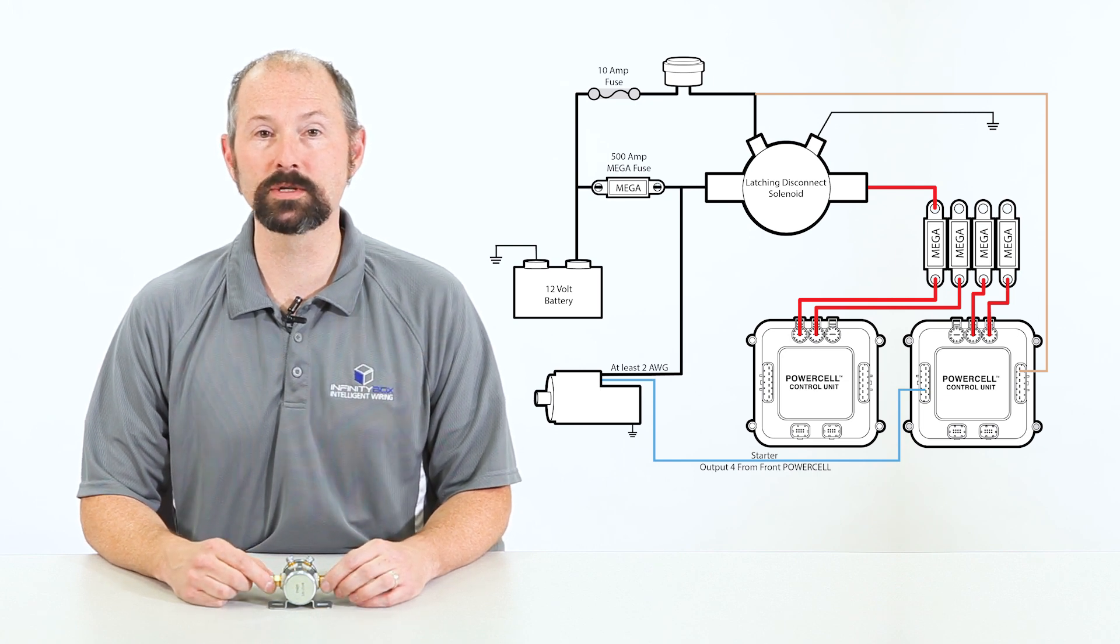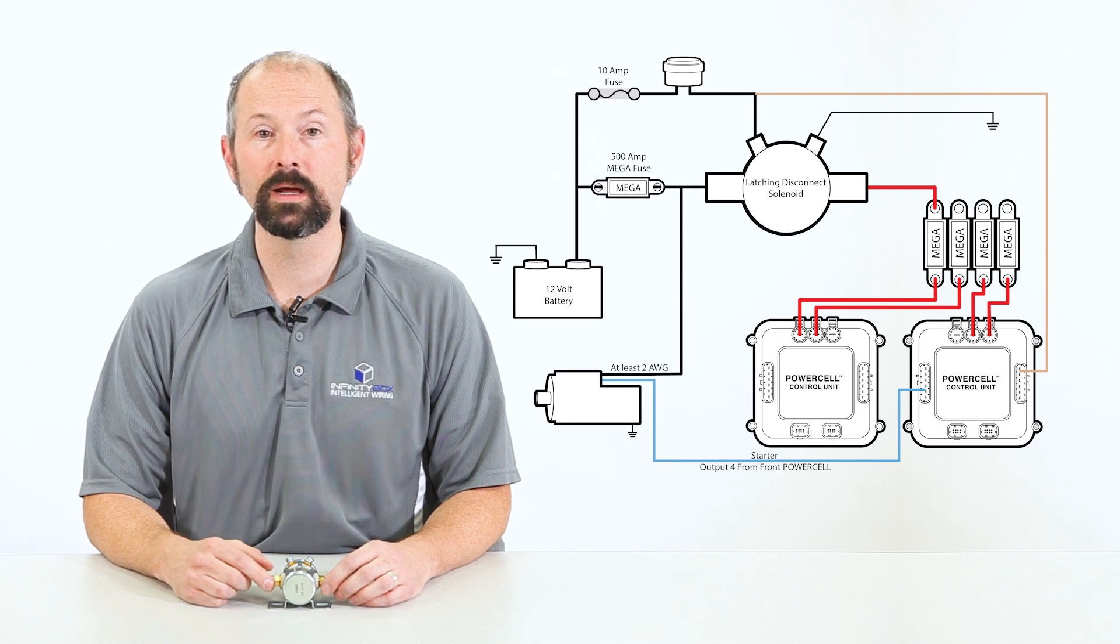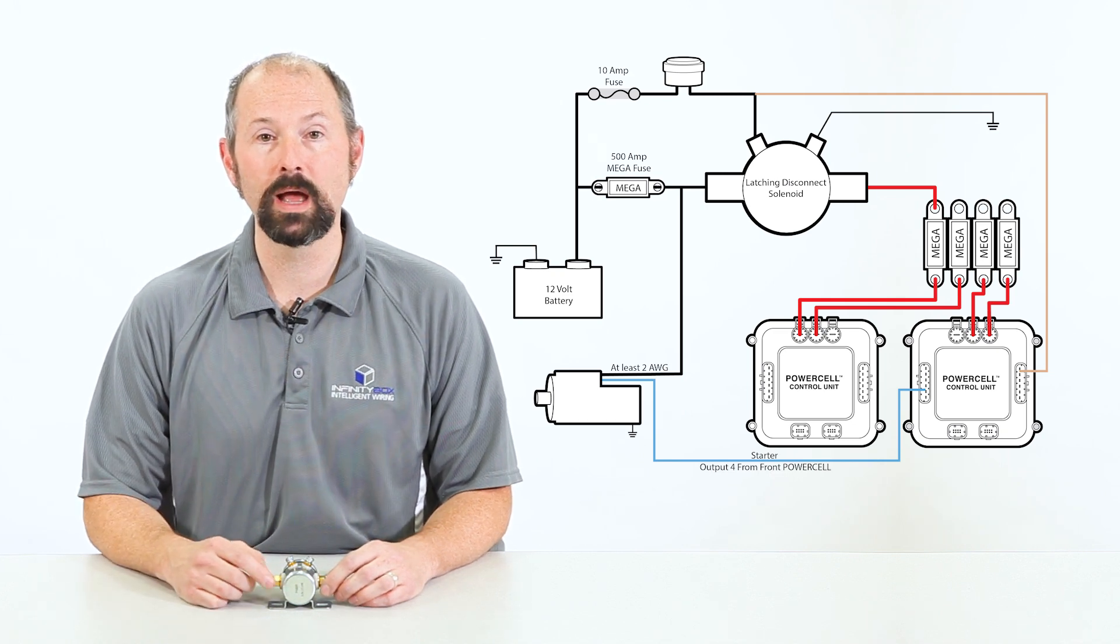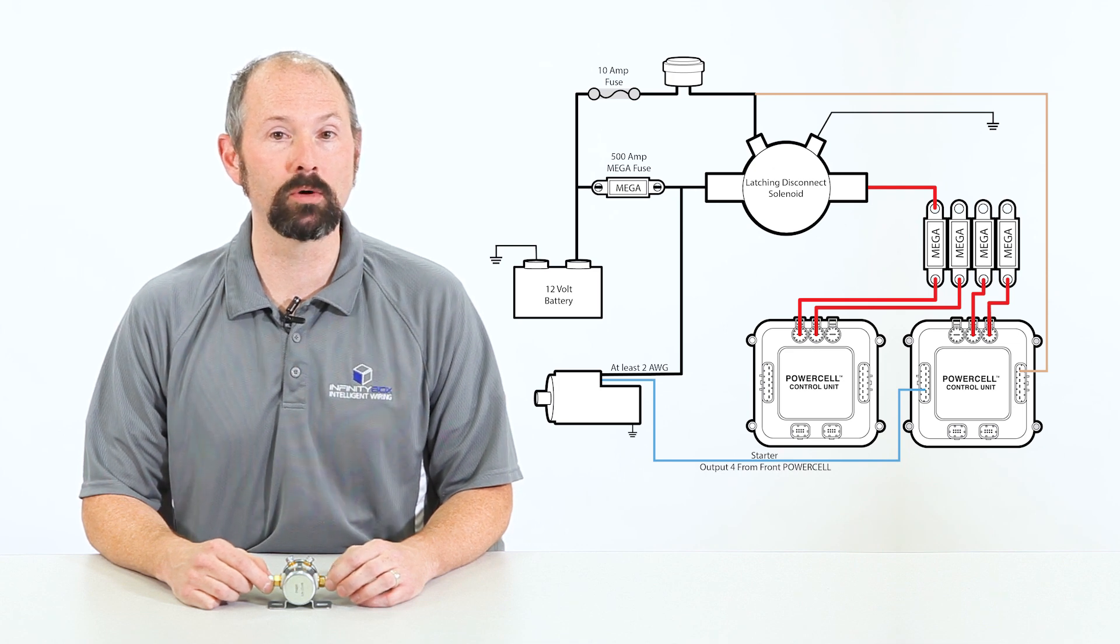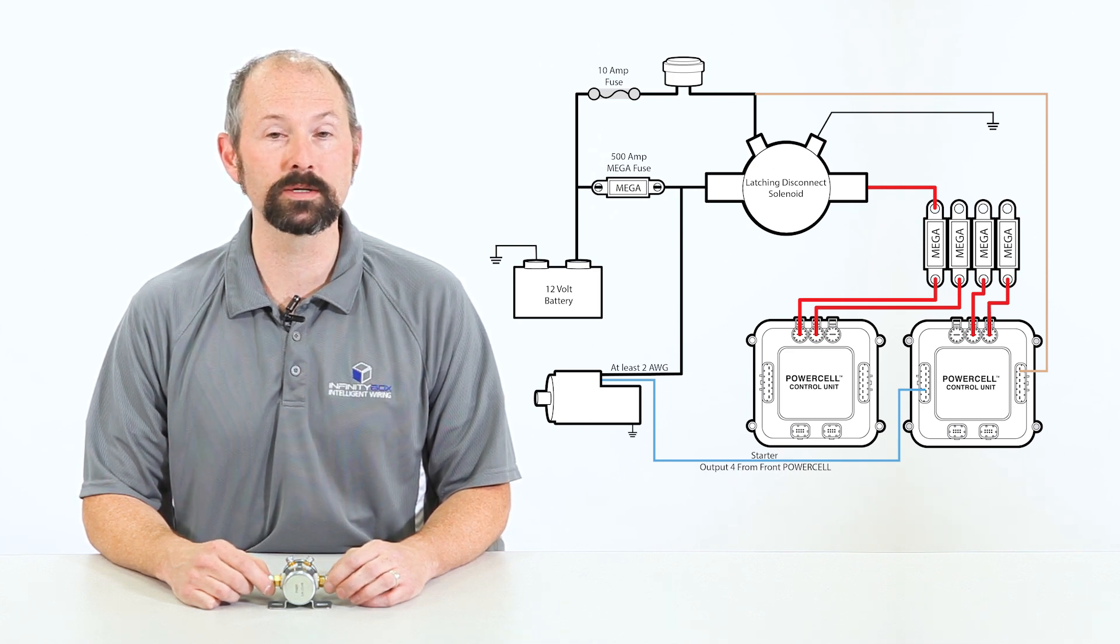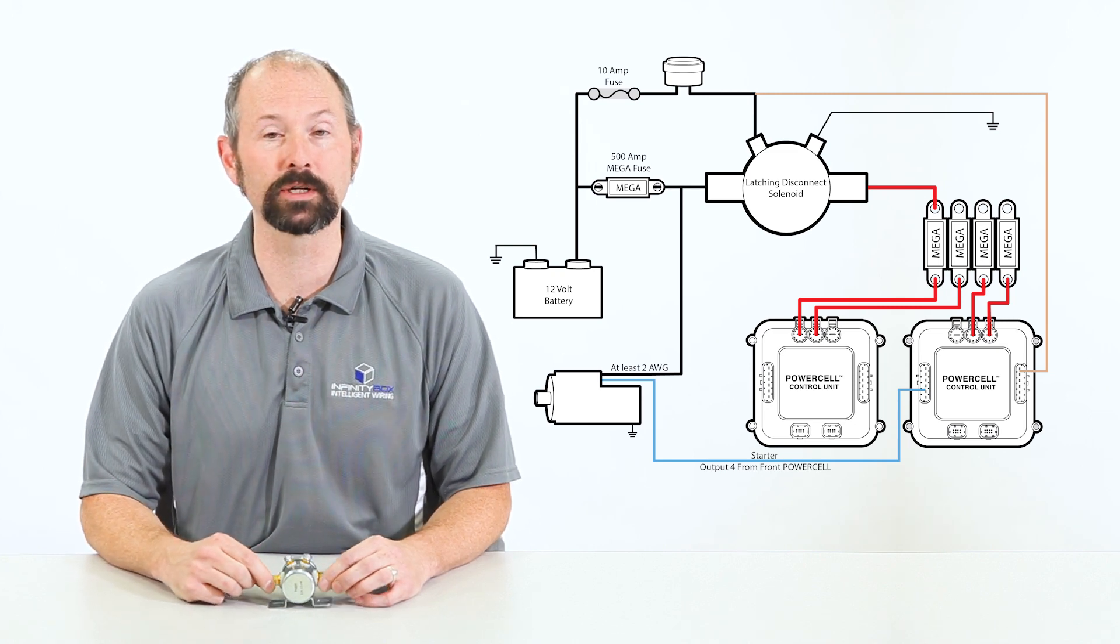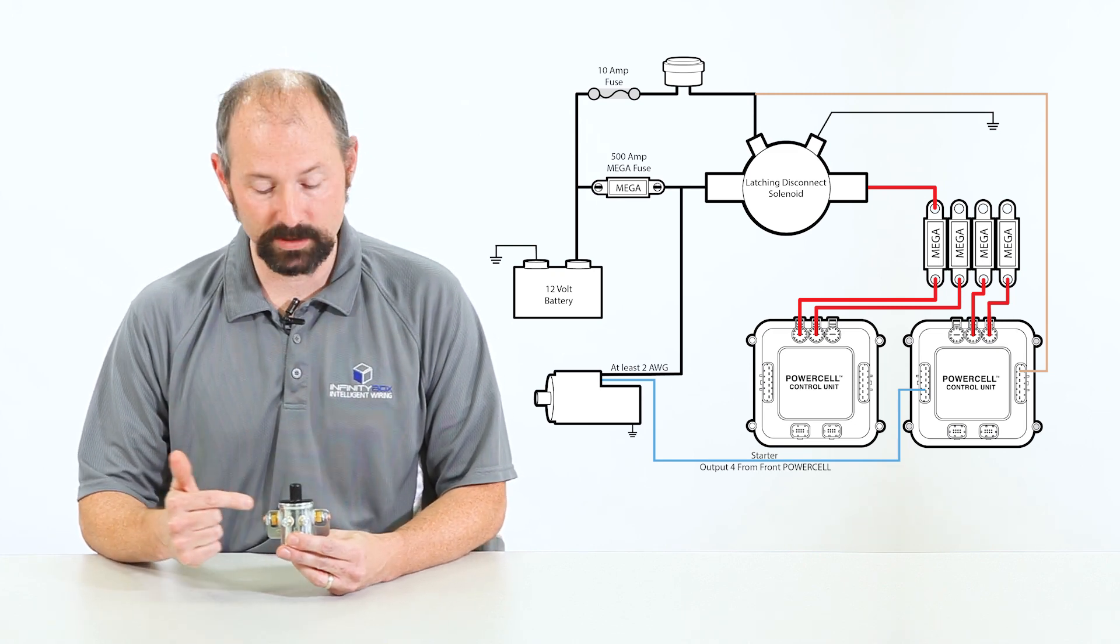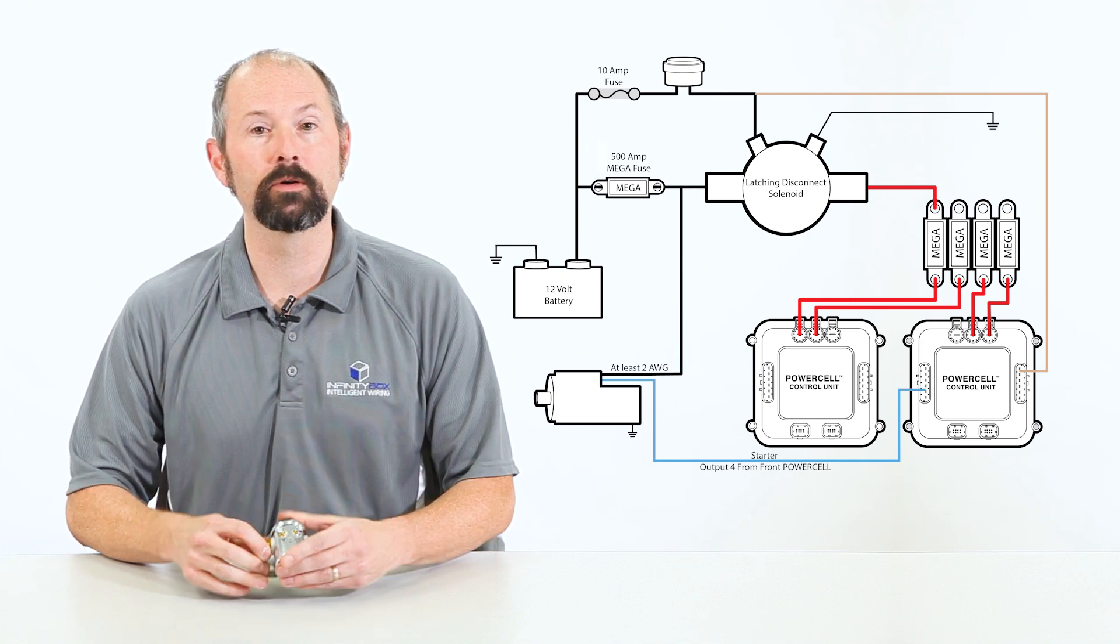First, the master cell looks and determines whether or not the ignition is on or off. If the ignition is off and the battery voltage drops below a threshold of 12.2 volts for more than 15 minutes, it asks a power cell to send a pulse to the special latching solenoid. And when it does that, this actively disconnects all the battery draw from your system.